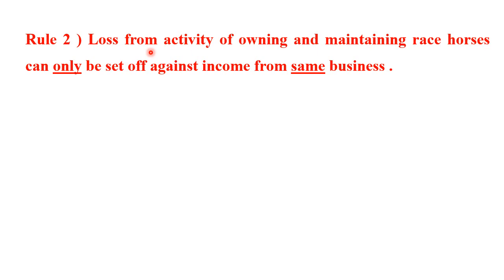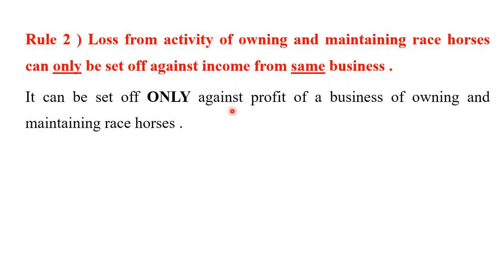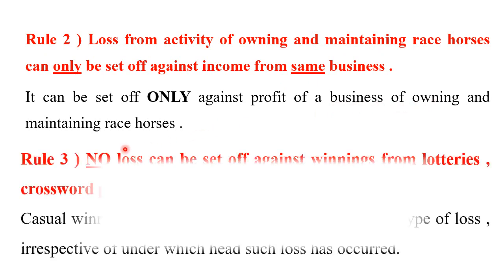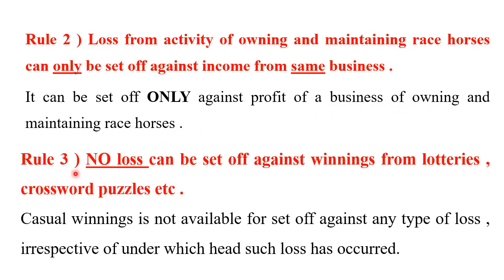Rule number 2: loss from the activity of owning and maintaining of race horses can only be set off against income from the same business — owning and maintaining of race horses. Rule number 3: no loss can be set off against winning from lotteries, winning from card games, crossword puzzles, etc. These are casual winnings, and no deductions or losses can be adjusted against them because they are taxable at the special rate of 30%.